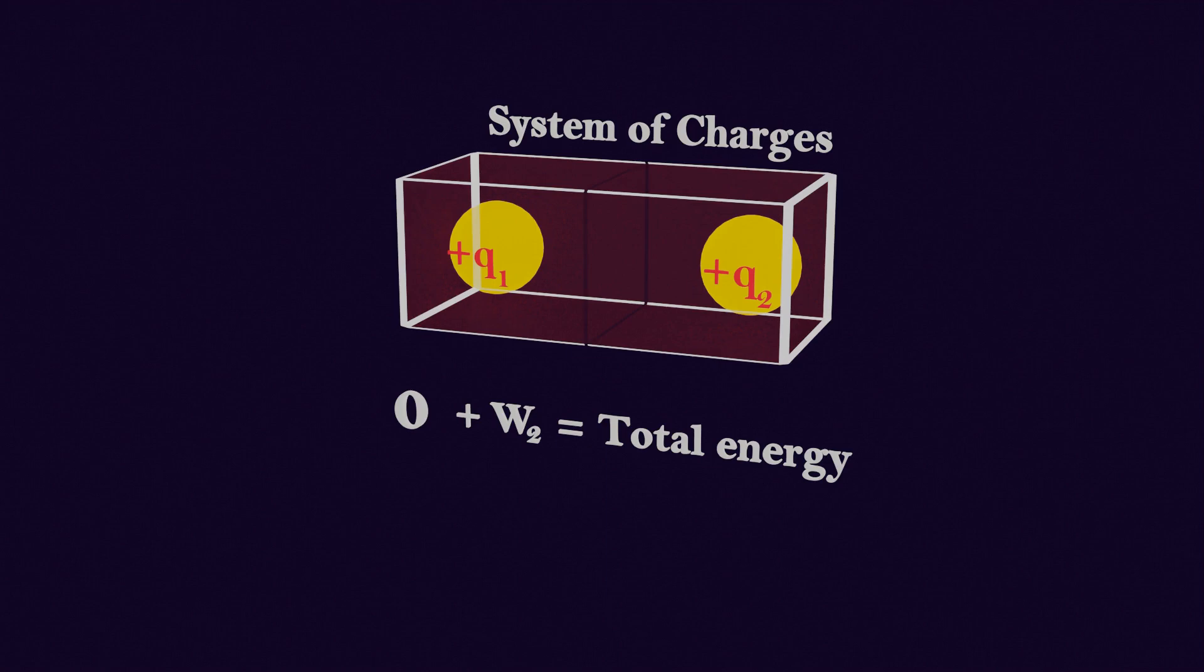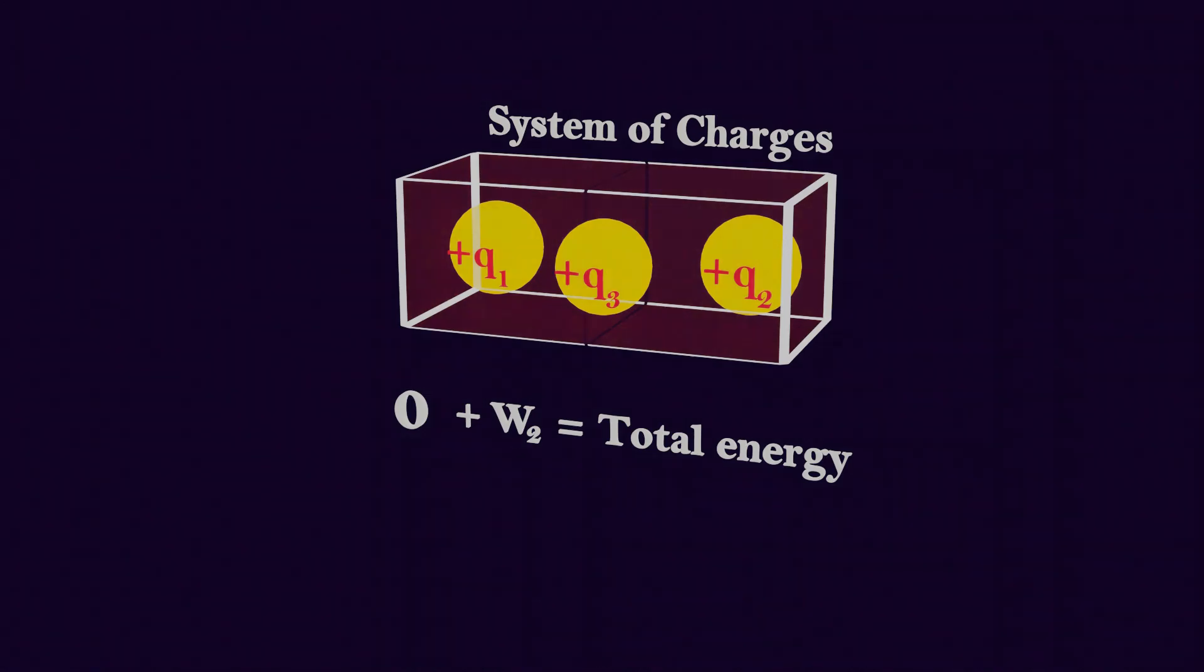If we want to make another charge q3 a part of this system of charges, we will need to do even more work than the last charge. This is because in the system, both charges are now repelling charge q3. As we keep adding charges to the system, the potential energy of the system increases. And to make each new charge a part of the system, we need to do even more work. In this way, we can create high energy systems of charges by adding numerous charges to it.